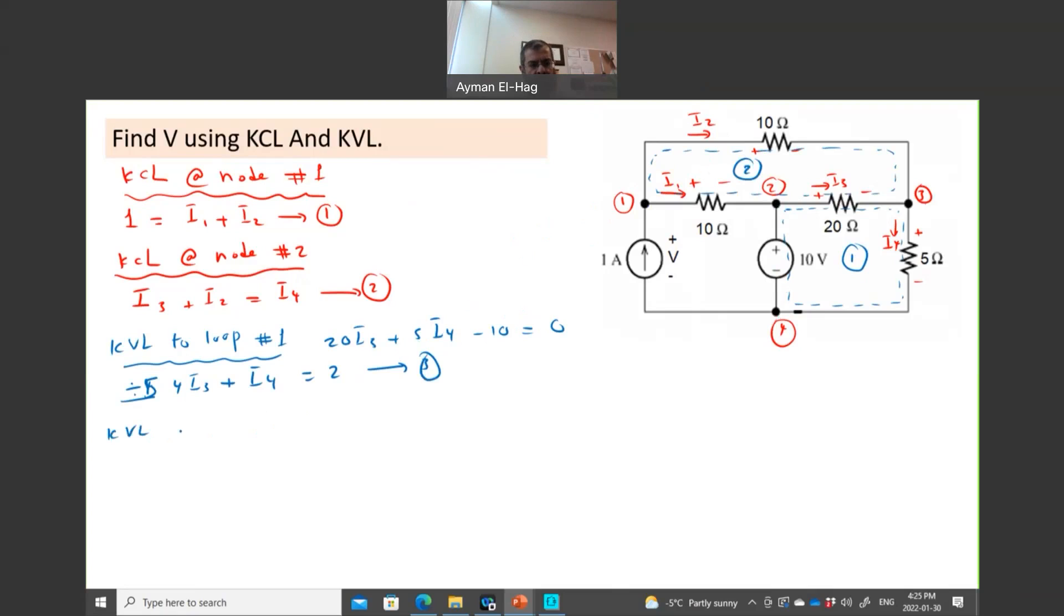So KVL to loop number two. We will have 10 times I2, so 10I2. We are going clockwise, so we'll have here minus 20I3. It means minus I1, and this is equal to zero. Let's divide everything by 10. So we'll have I2 minus 2I3 minus I1 equal to zero. And this is my fourth equation.